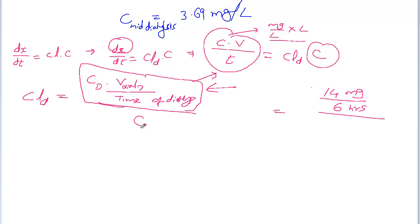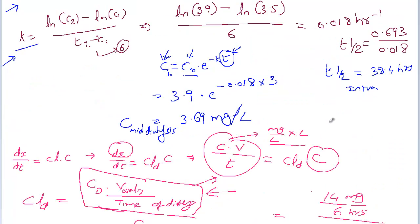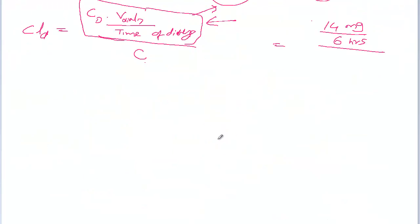What concentration do we use — 3.9 or 3.5? It's best to select the mid-point concentration, which we calculated earlier as 3.69 mg/L. So the ideal concentration to use is C_mid dialysis = 3.69 mg/L.